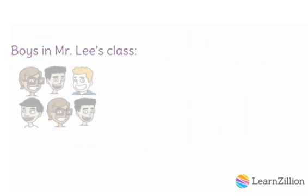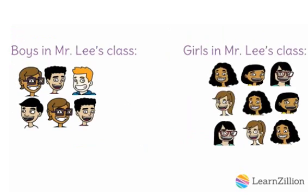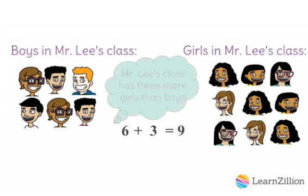The third way we can compare the students in these classes is by comparing the number of boys and girls in Mr. Lee's class. Mr. Lee's class has six boys, and if we added three more students, we would get nine, which is the same number of girls in Mr. Lee's class. Therefore, Mr. Lee's class has three more girls than boys.